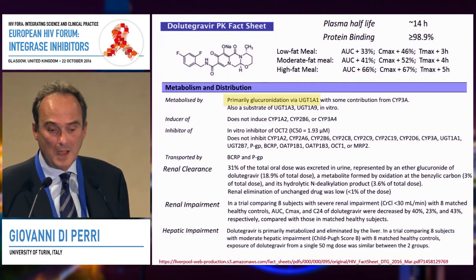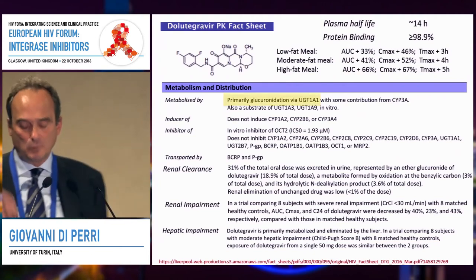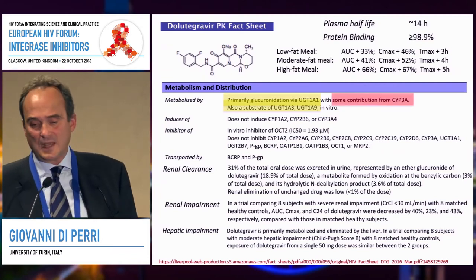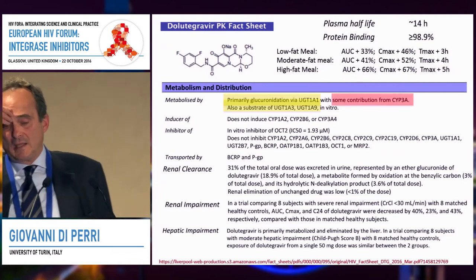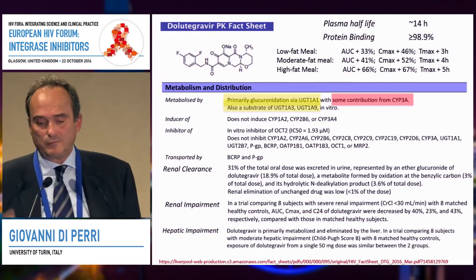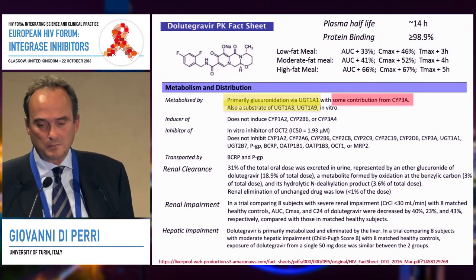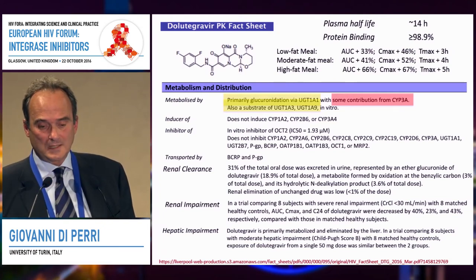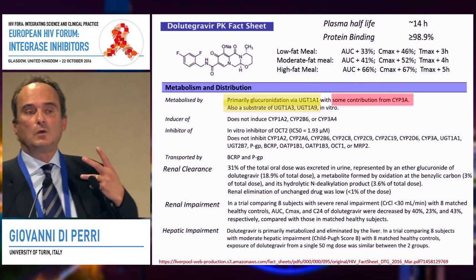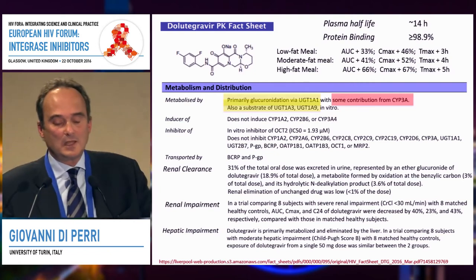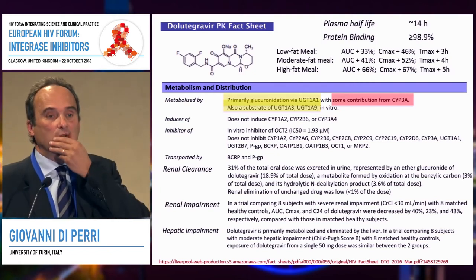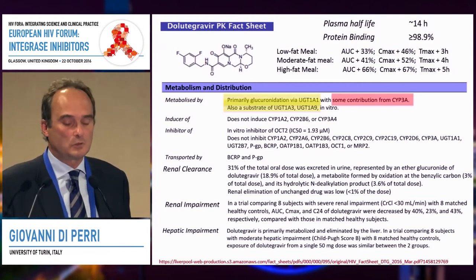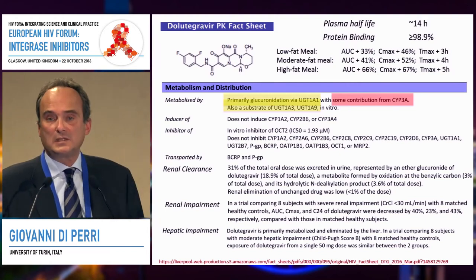The third integrase inhibitor, dolutegravir, is primarily glucuronidated, but there is some contribution from CYP3A4 to be considered. At the end of the day, there are no relevant differences attributable to CYP3A interference with dolutegravir metabolism. Glucuronidation, which is otherwise an unusual metabolic pathway for antiretrovirals, is important for this category of drugs.